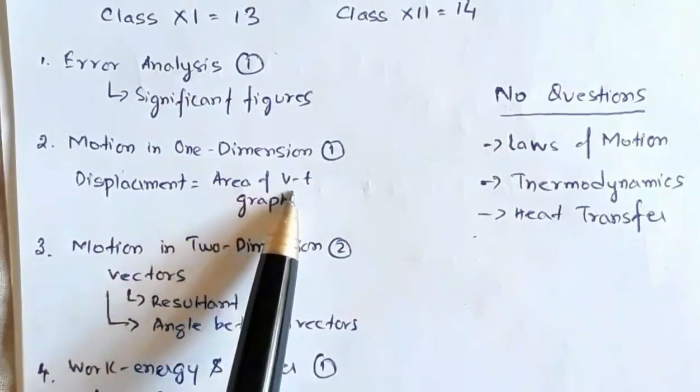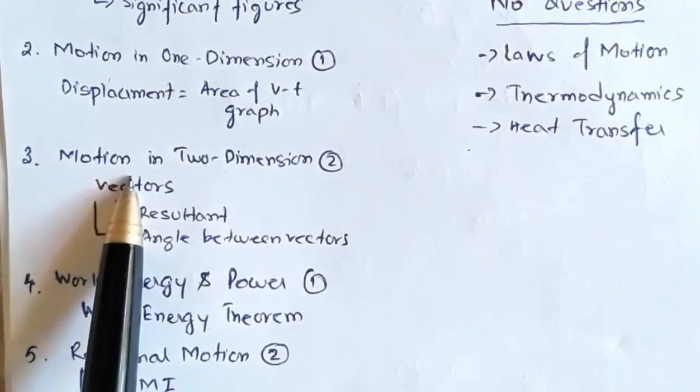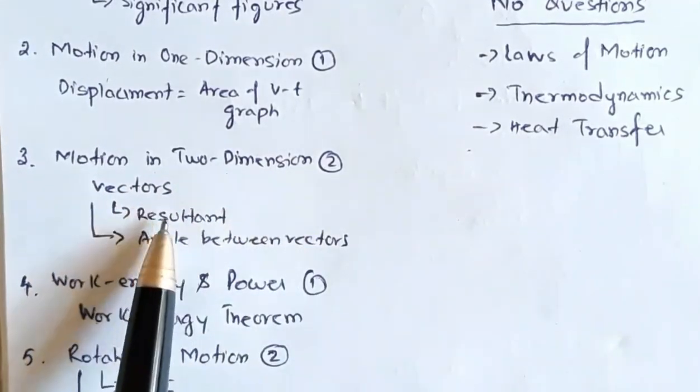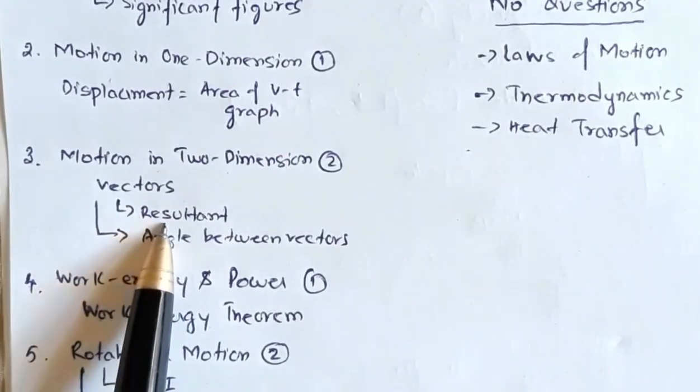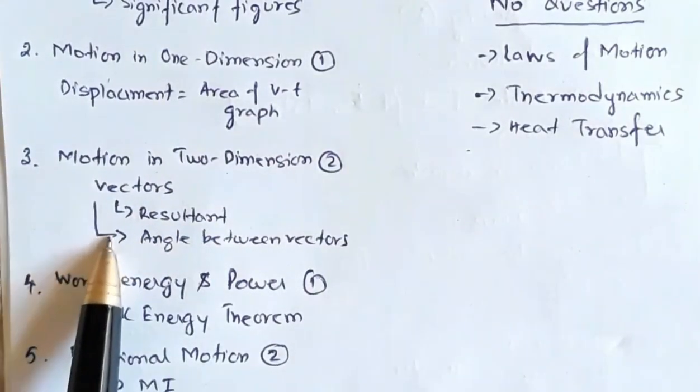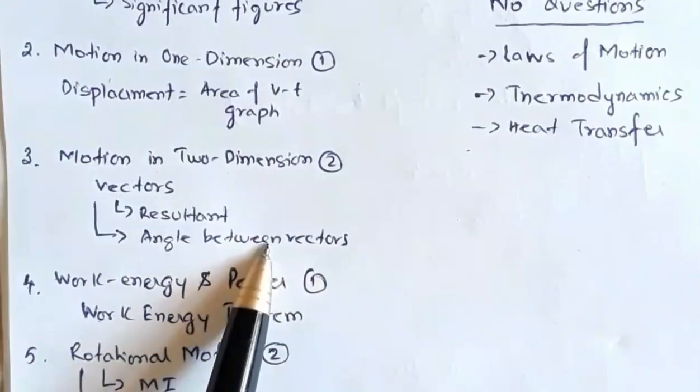In the chapter motion in two dimensions there were two questions from the topic vectors: one question involving resultant of vectors, the other one based on angle between vectors in relation to dot product and cross product.